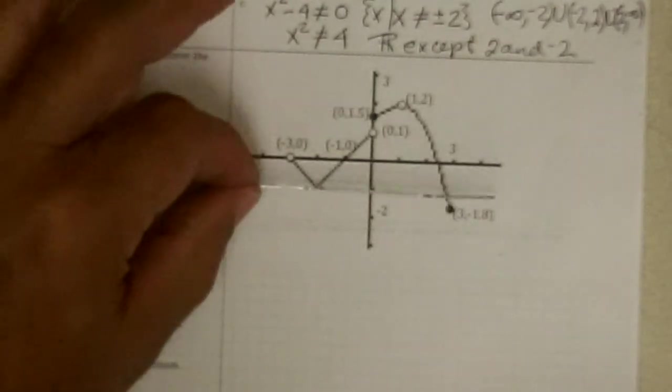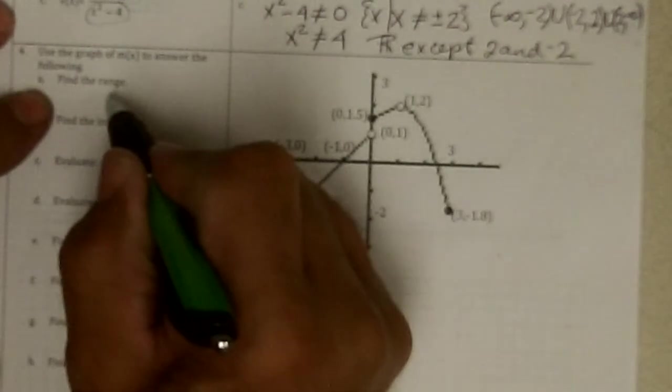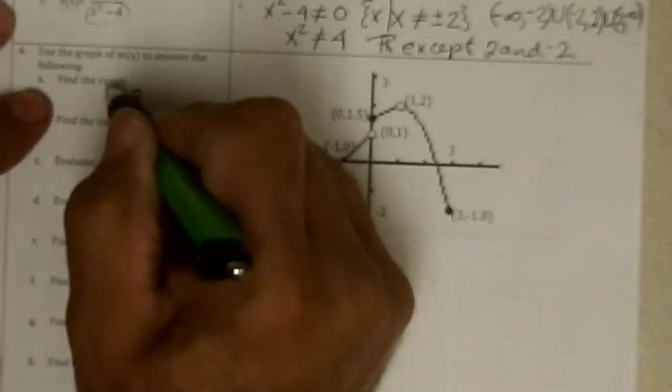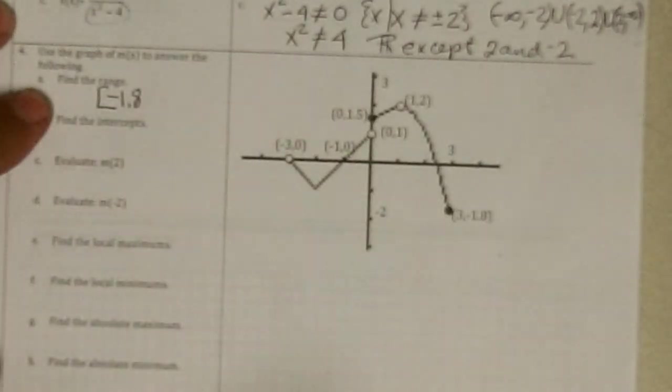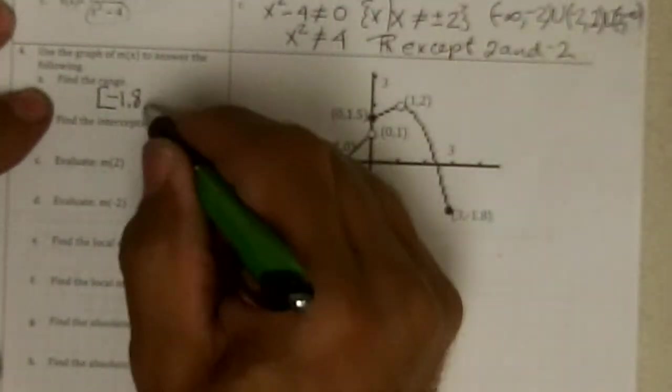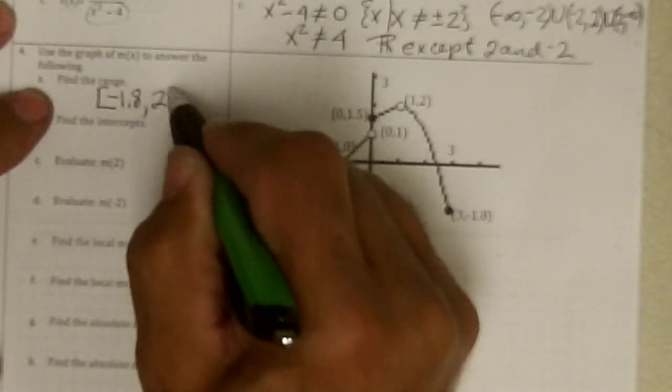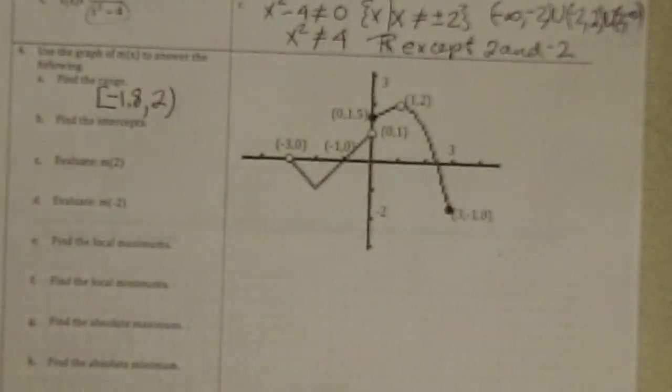I'm looking at the y values. Don't look at the x's when I'm doing range. So the range started at negative 1.8. And it was a solid. It included that. And it went clear up to 2, but not including the 2.